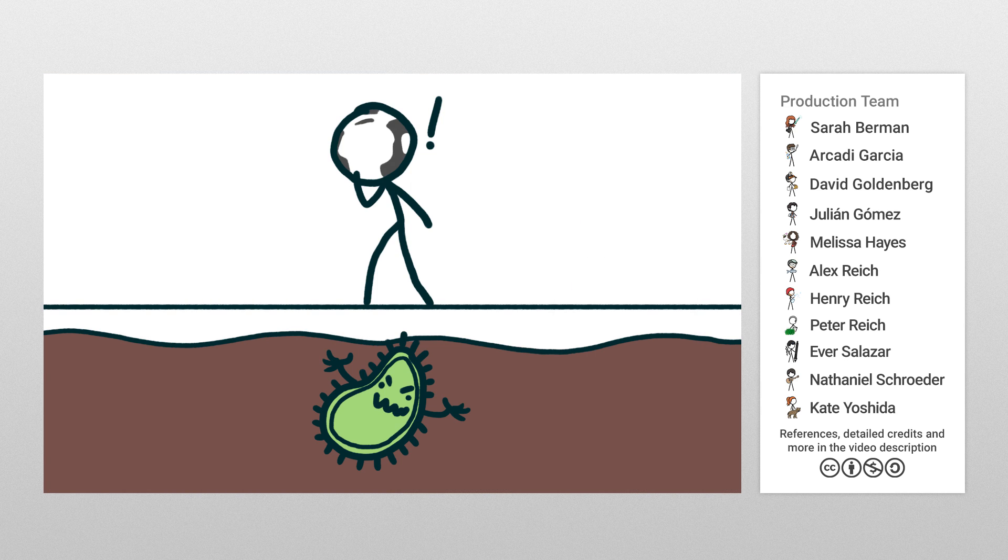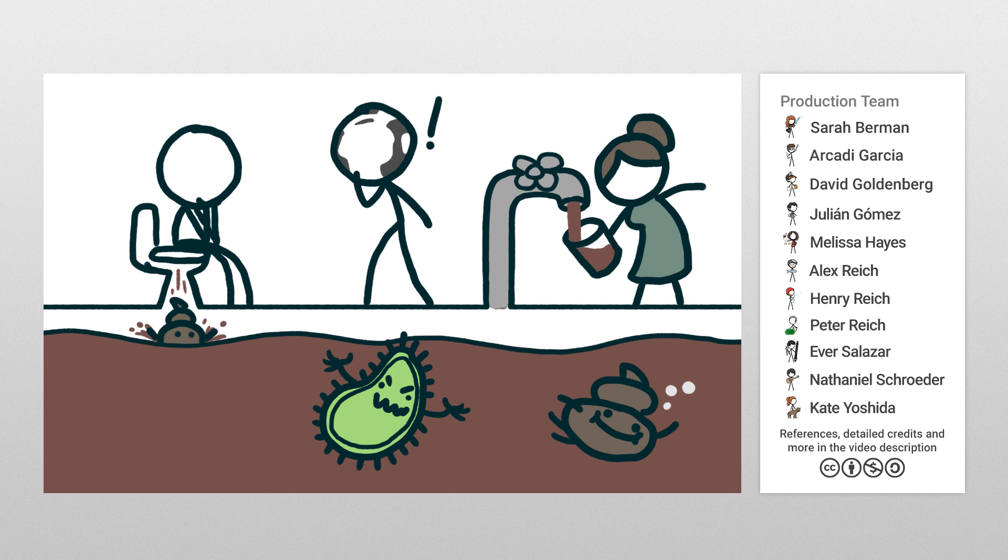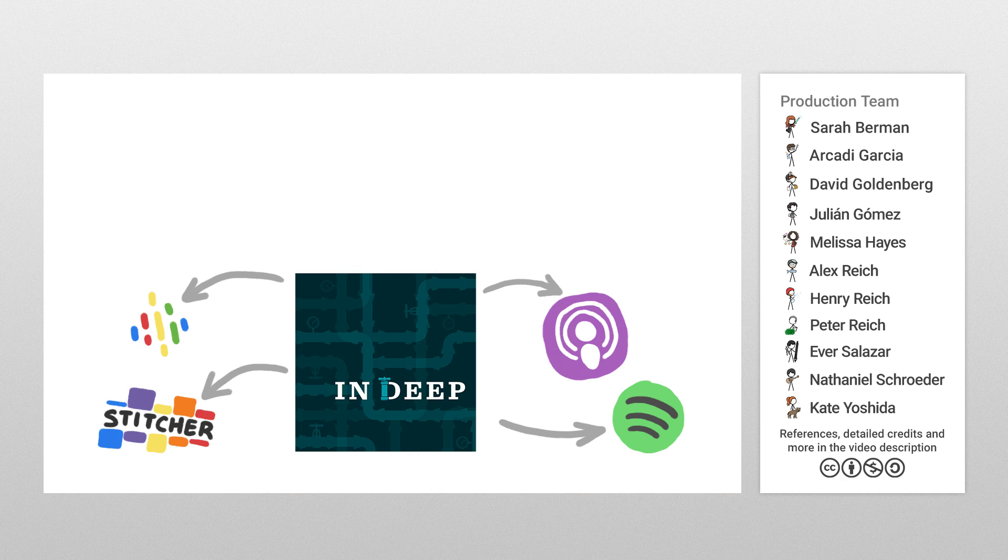In the first episode, Kim explains how we first learned about the connection between disease and sewage, and how we learned the hard way that we can't poop where we drink, or vice versa. Subscribe via Apple Podcasts or wherever you find your podcasts, and find out more at indeep.org.